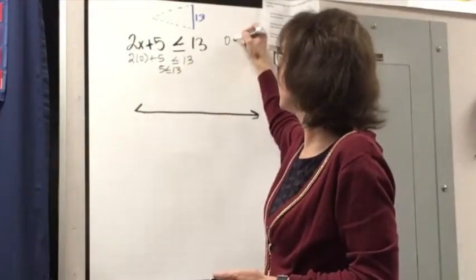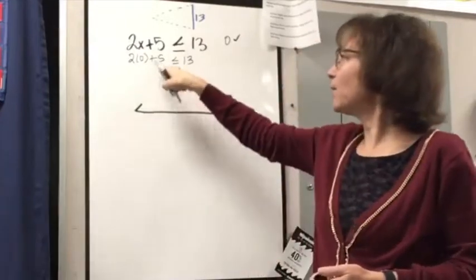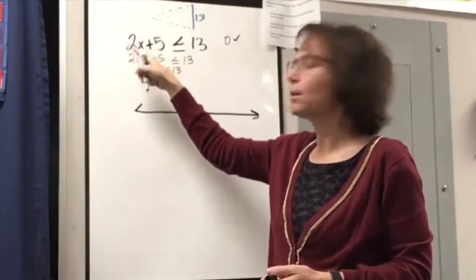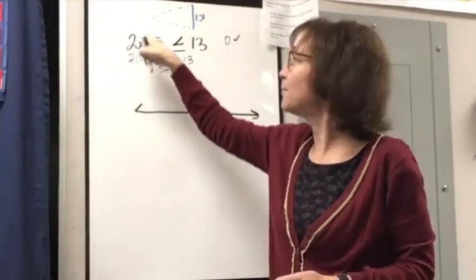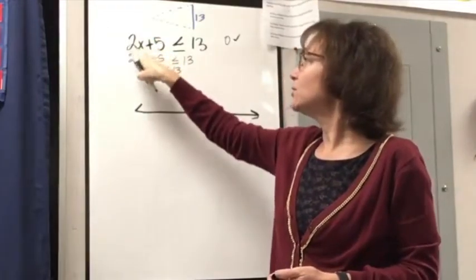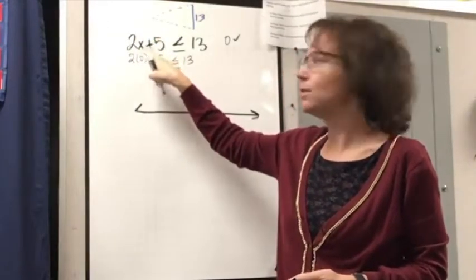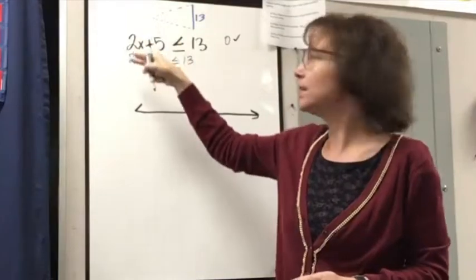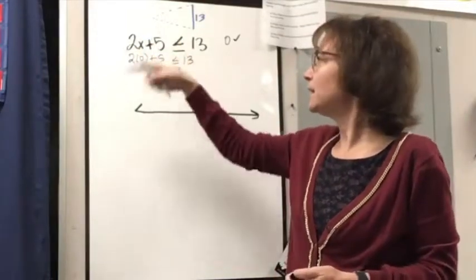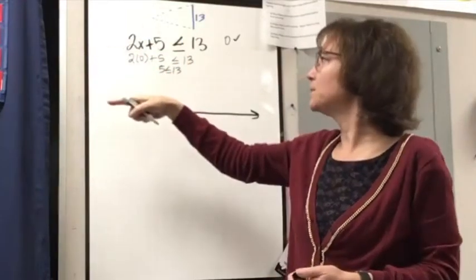So 0 I know is going to work. And I can keep going. I know all the numbers less than 0 are probably going to work, because that will be negative here. And so 2 times a negative number is going to, when I add it to 5, it's going to decrease that value. So anything beyond 0 is definitely going to be true.